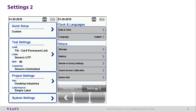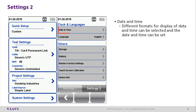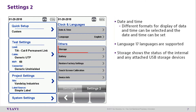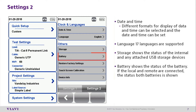Under Settings 2, Date and Time allows you to choose different formats for displaying time and date. There are 17 languages available on the certifier. Clicking on the Storage tab displays the current amount of storage space available on the internal and any attached USB storage devices. The Battery tab will show you the current battery level, and if the local and remote unit are connected, you will also be able to view the status of the remote unit.